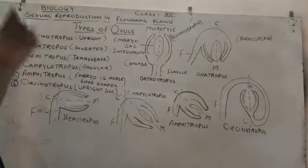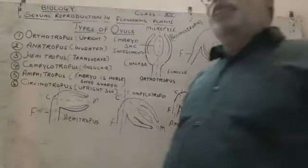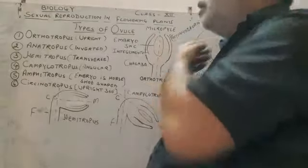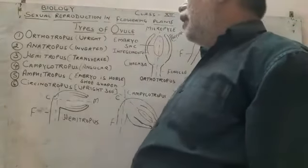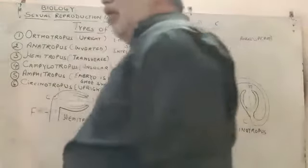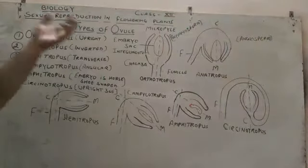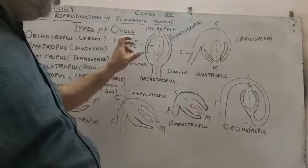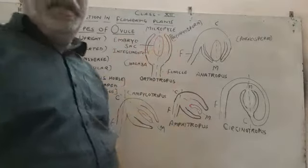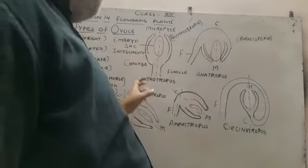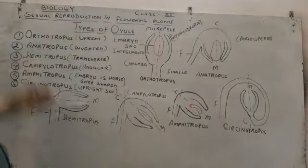Hello students. Today I will discuss about types of ovules. An ovule is attached to the body via the funicle. On the basis of the attachment of the body to the funicle, ovules can be categorized into the following types.